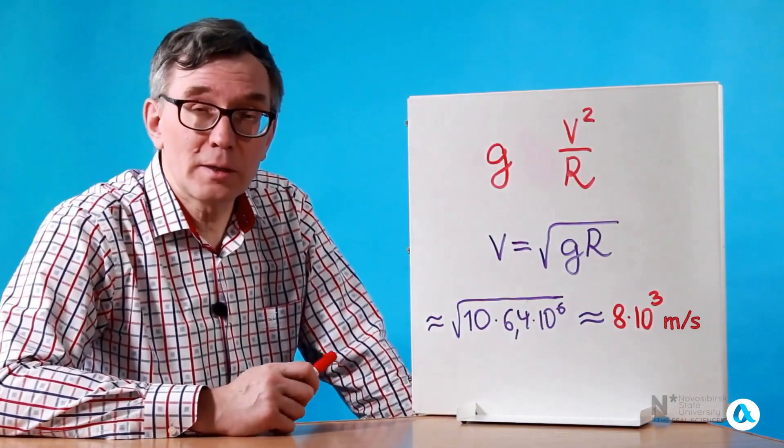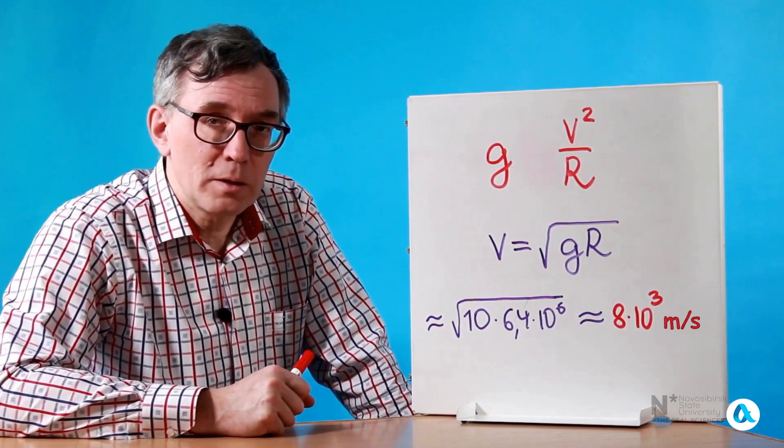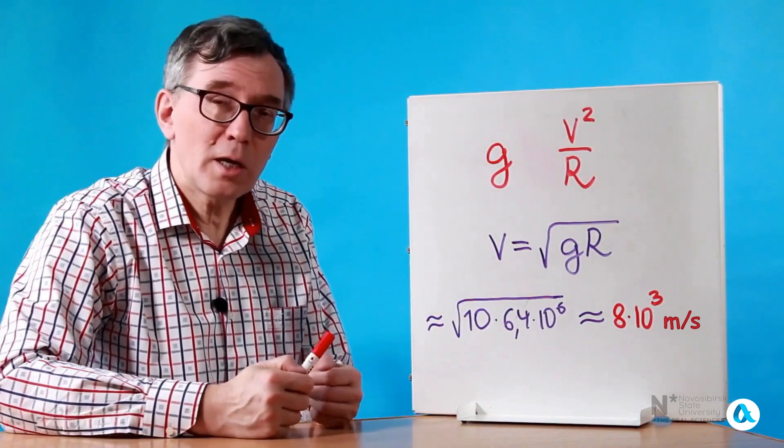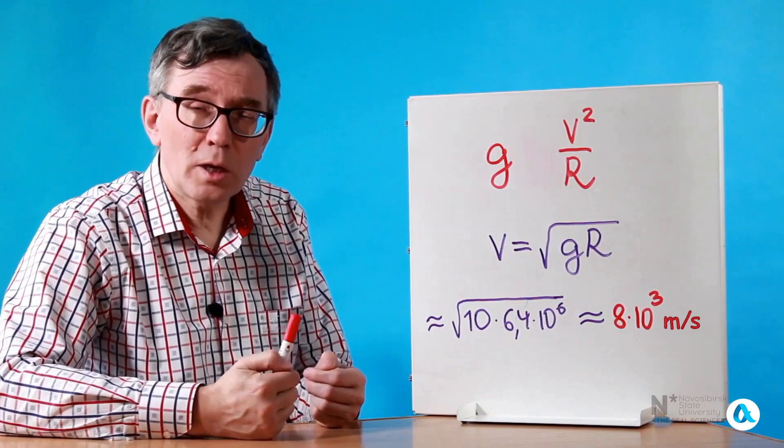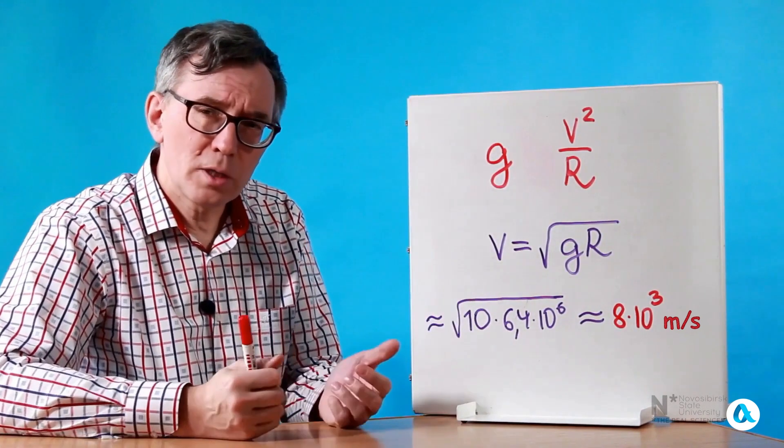Now let's calculate the speed at which a projectile moves in a circular orbit around the Earth. On one hand, all projectiles, regardless of their initial speed, fall to the Earth with the acceleration of free-fall G.